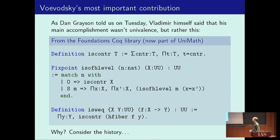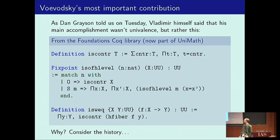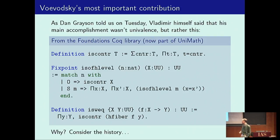Dan Grayson already told us on Tuesday that Vladimir himself actually said that his main accomplishment was not univalence, but rather the definition of H-levels, which I've copied from his foundations library: contractibility and the H-levels starting at contractibility and moving up through propositions and sets and groupoids and so on. I would certainly include the definition of equivalences as part of this really important contribution.